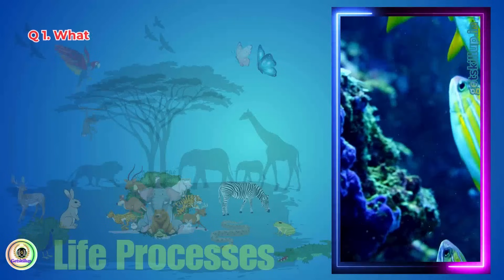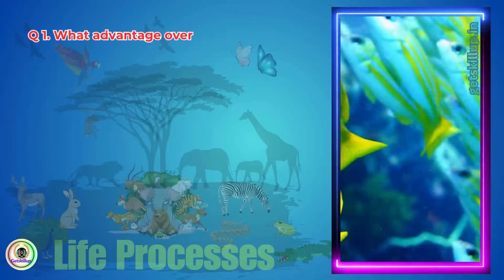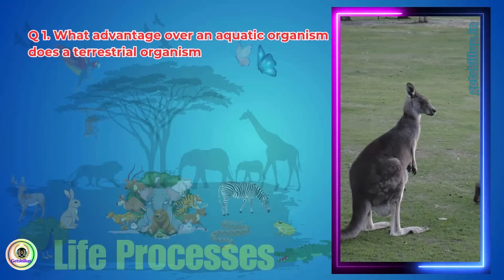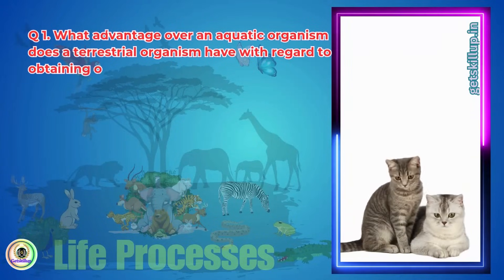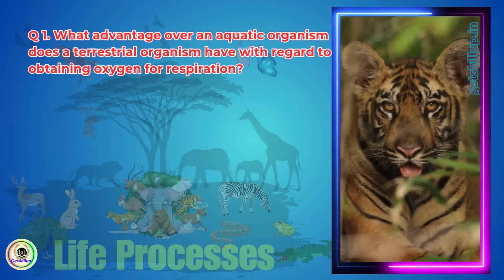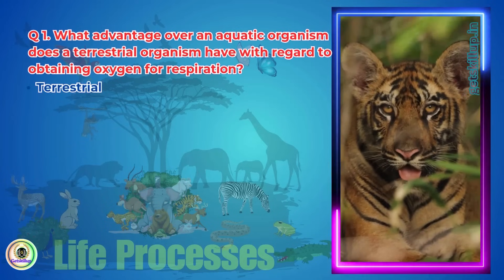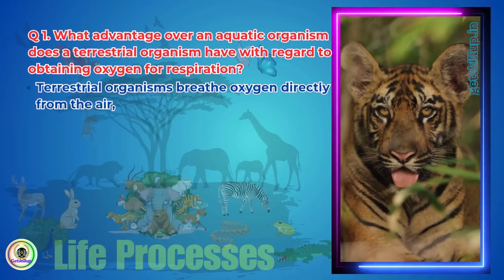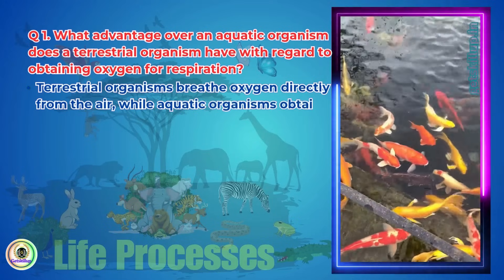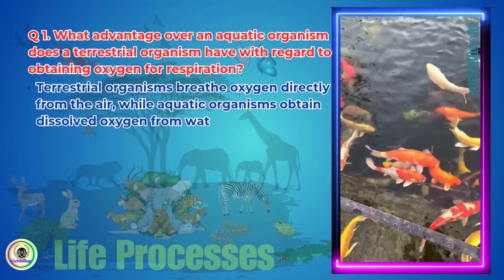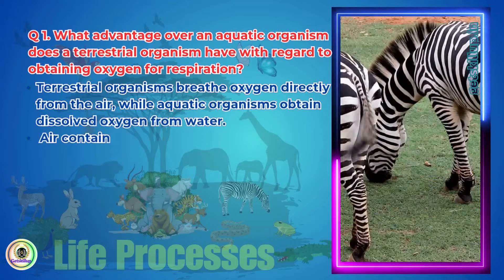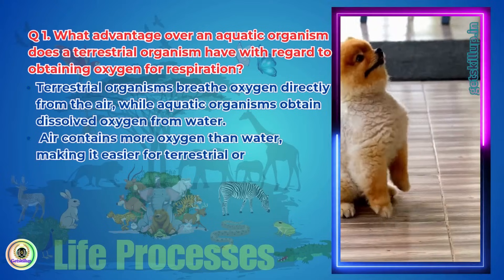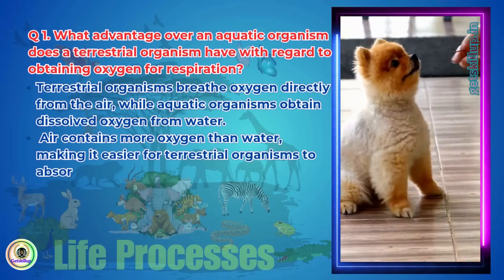Question 1: What advantage over an aquatic organism does a terrestrial organism have with regard to obtaining oxygen for respiration? Terrestrial organisms breathe oxygen directly from the air, while aquatic organisms obtain dissolved oxygen from water. Air contains more oxygen than water, making it easier for terrestrial organisms to absorb oxygen.